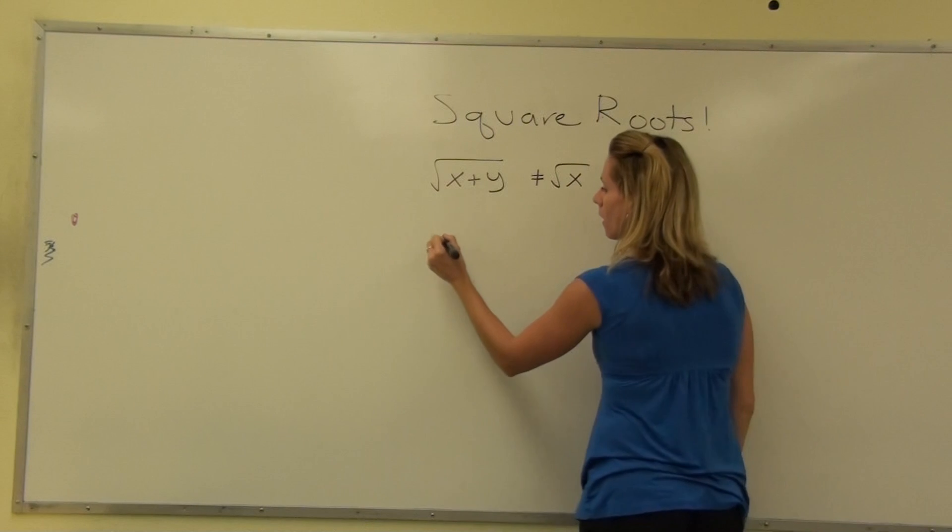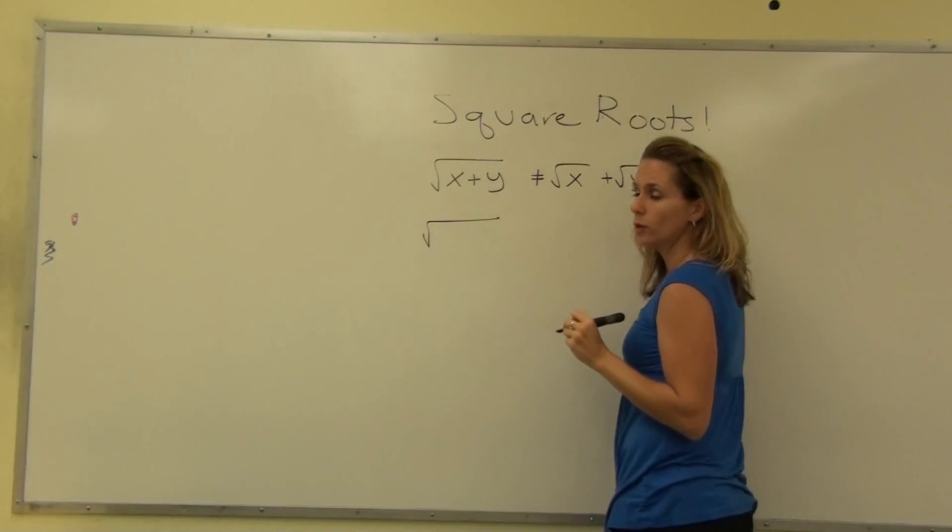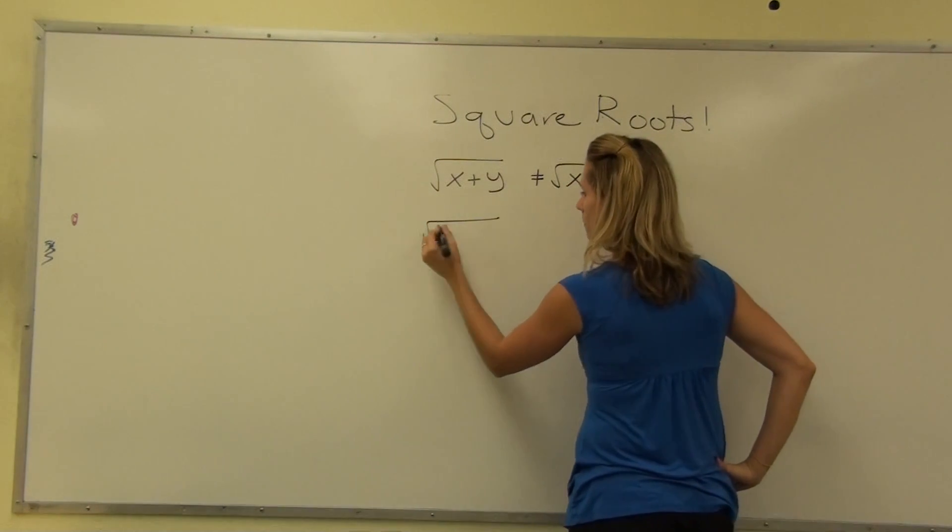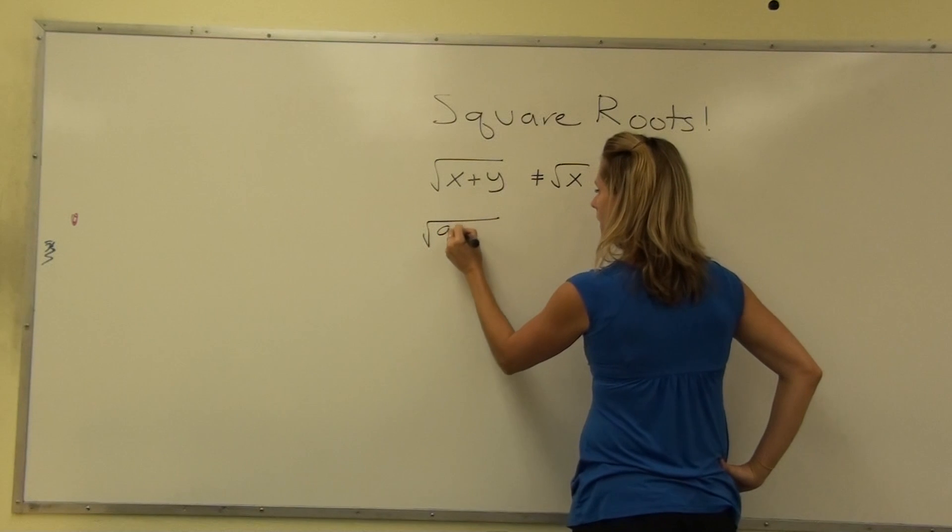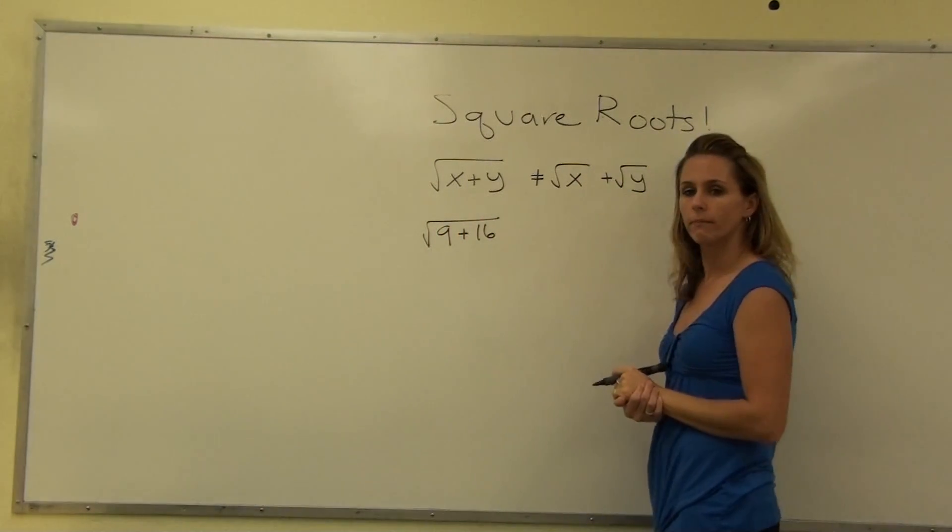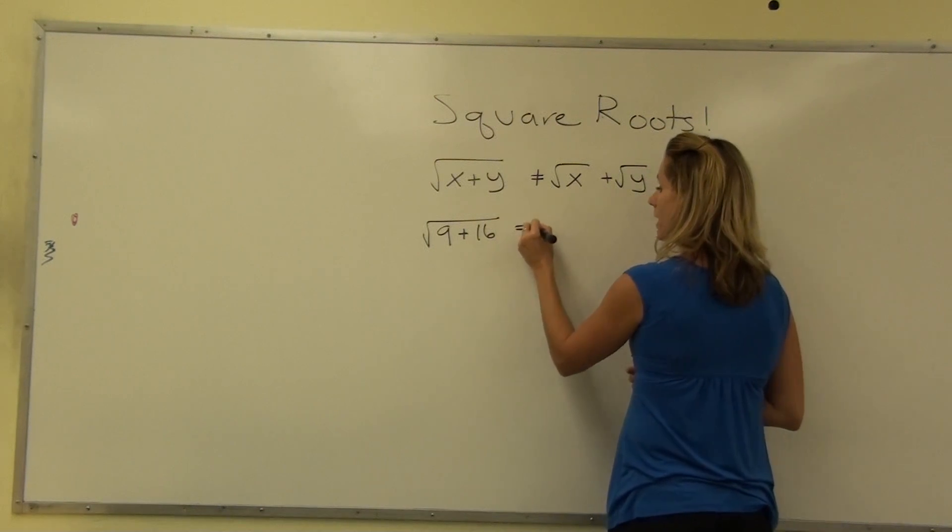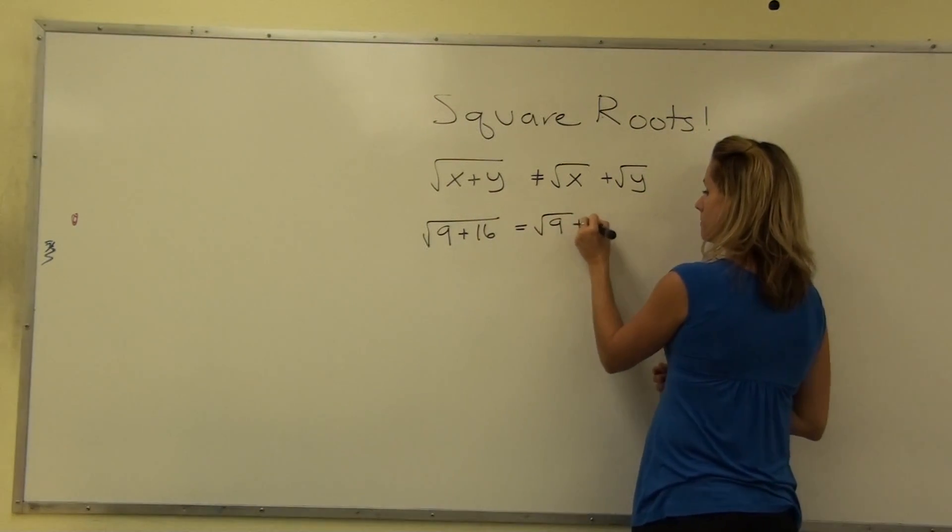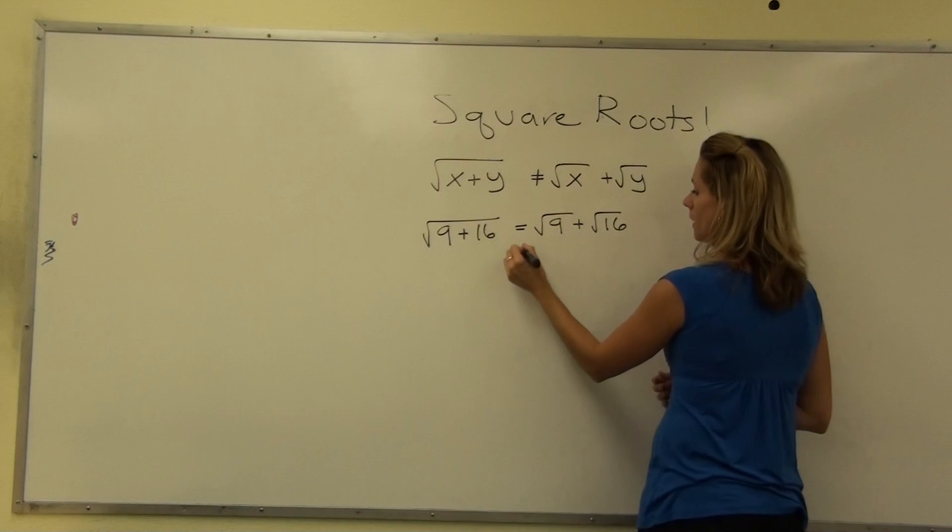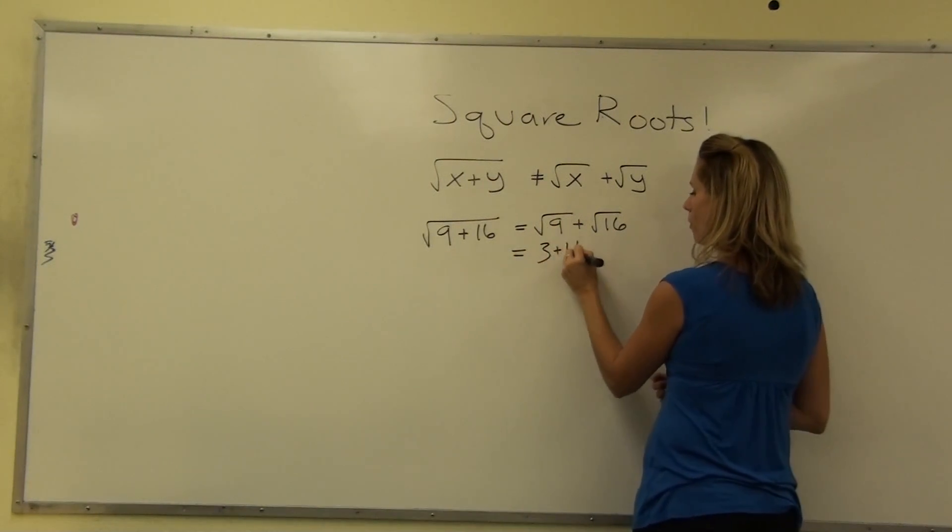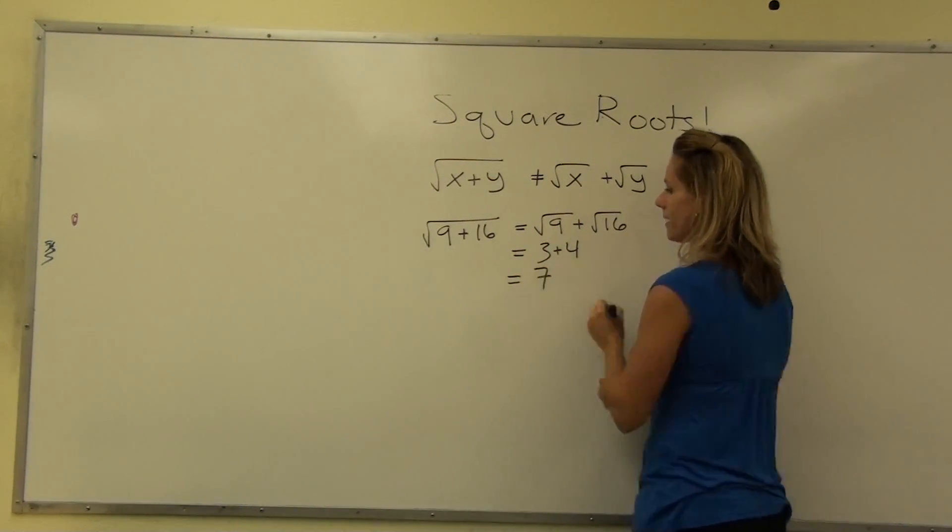Let me show you why. Now, let's take the square root of, say, 9 plus 16. If we follow this, we would claim that that's the square root of 9 plus the square root of 16. And we would say, well, that's 3 plus 4, which would equal 7.